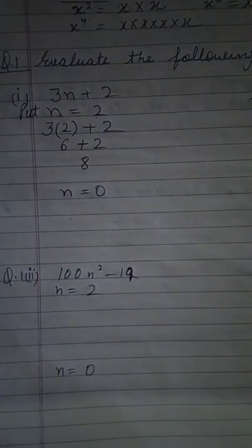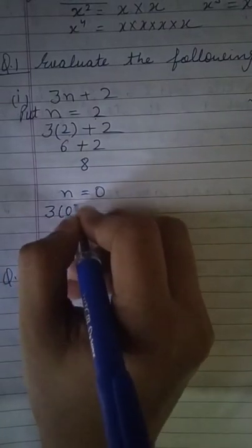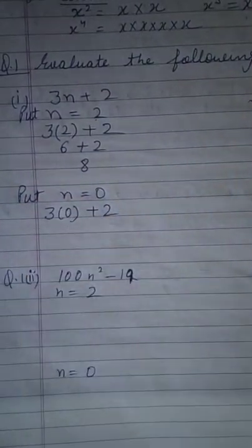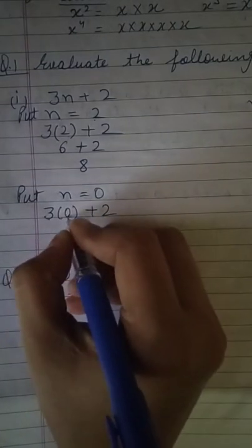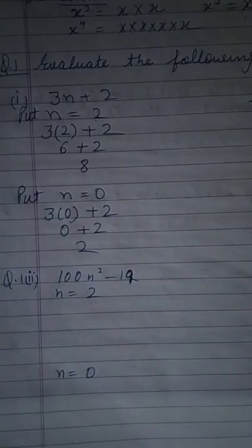Similarly, we put n equal to 0. I replaced the value of n with 0. 3 times 0 means 0. 0 plus 2 equals 2.